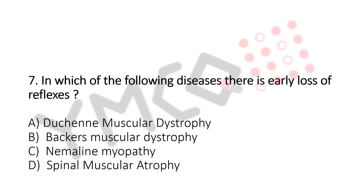In which of the following diseases is there early loss of reflexes? A. Duchenne muscular dystrophy. B. Becker muscular dystrophy. C. Nemaline myopathy. D. Spinal muscular atrophy. And the answer is...